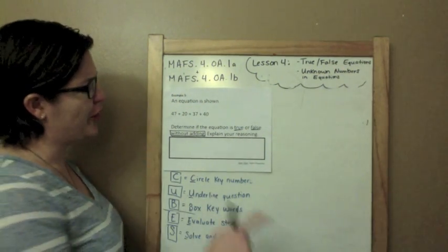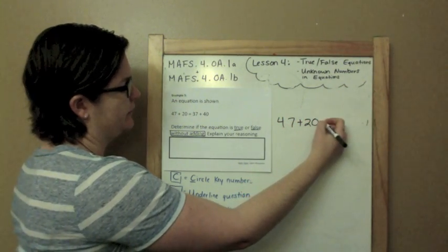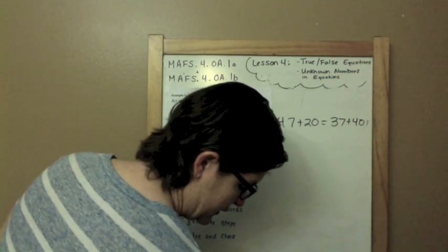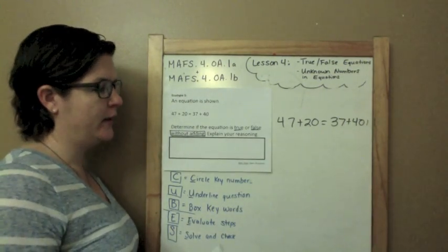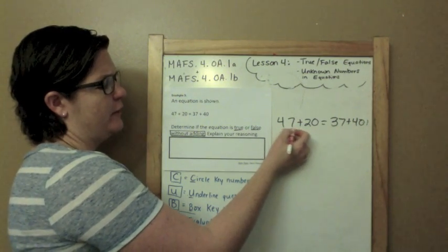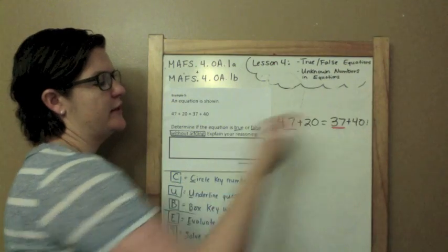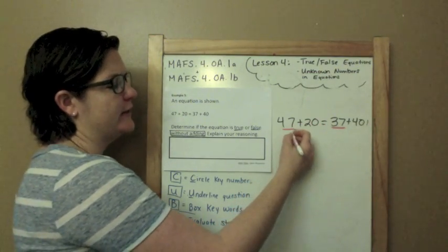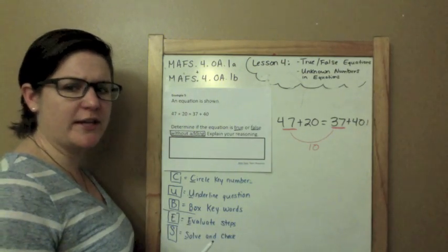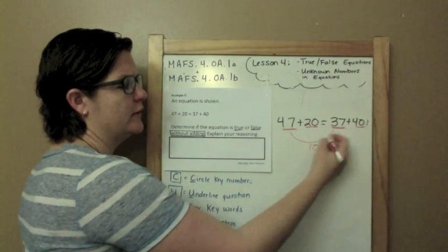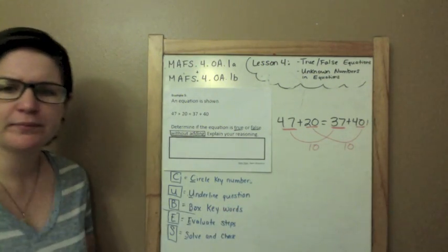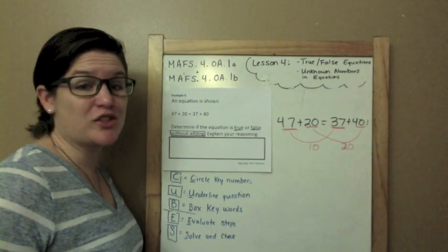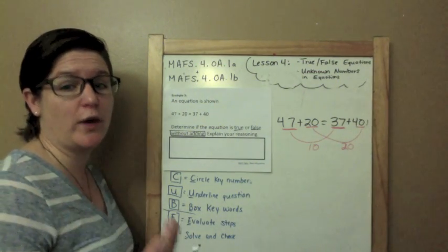We have 47 plus 20 equals 37 plus 40. I think I might need to break out some different colors for this one. I see 47 and I see 37, and I know that the difference between 47 and 37 is 10. So because of that, the difference between 40 and 20 is 20. So they don't match. And because of that, we're not going to get a balanced equation.